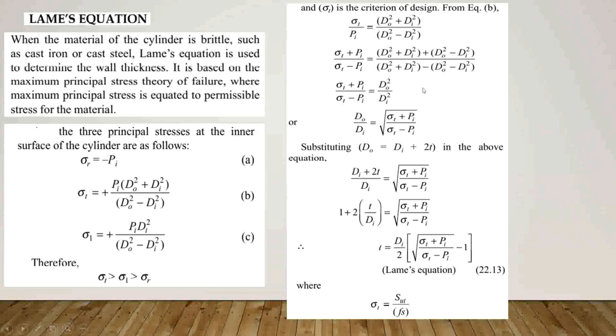Simplifying this expression, we get: DO divided by DI equals the square root of (sigma-T plus PI) divided by (sigma-T minus PI).